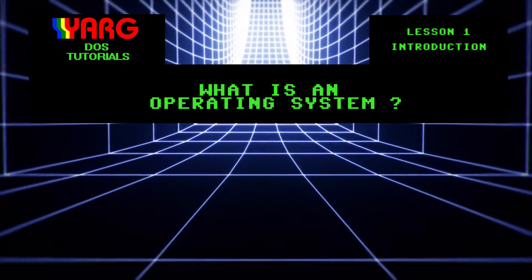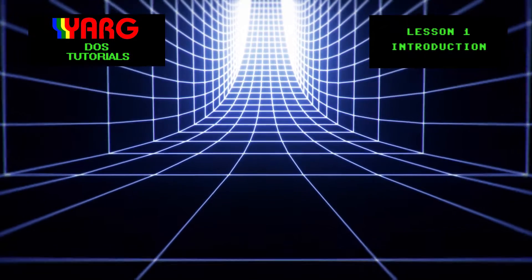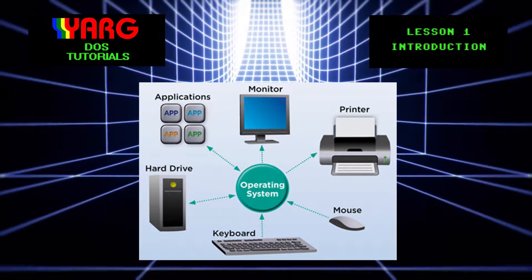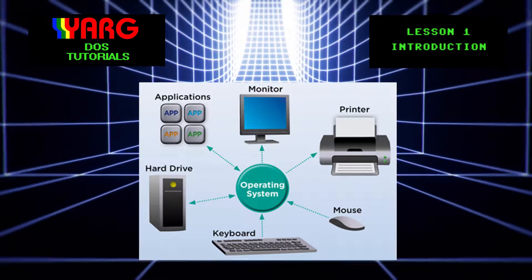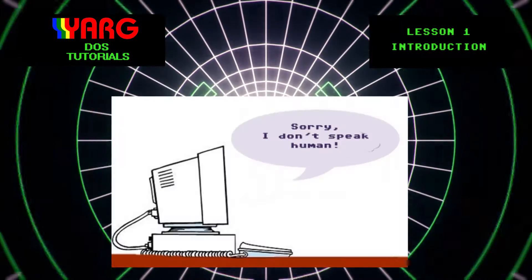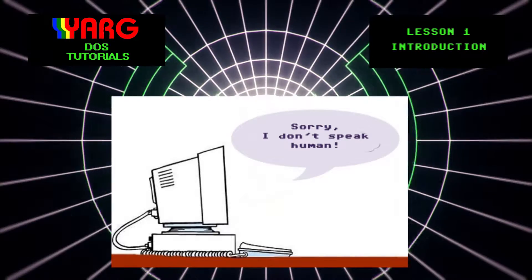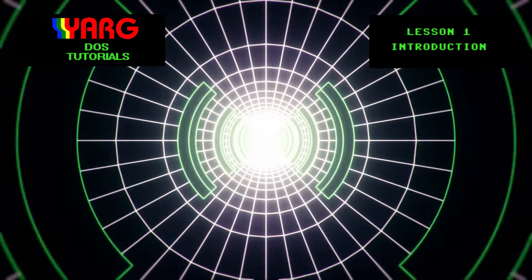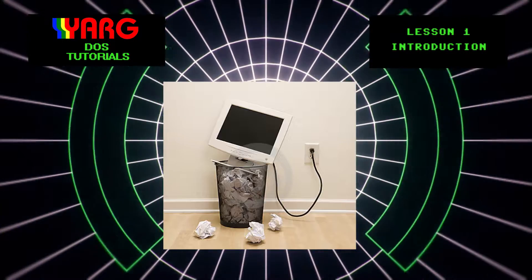Let's begin by defining what an operating system is. An operating system is the most important software that runs on a computer. It manages the computer's memory and processes as well as all of its software and hardware. It allows us to communicate with the computer without knowing how to speak the computer's language. Without some sort of operating system, a computer is useless.